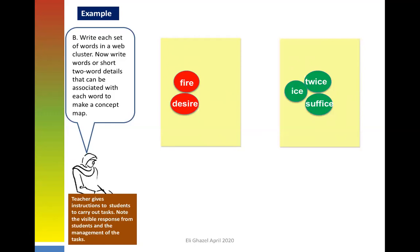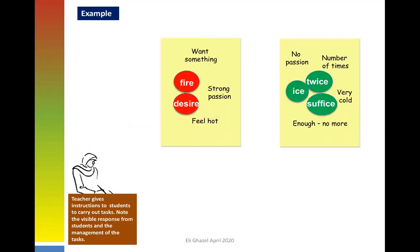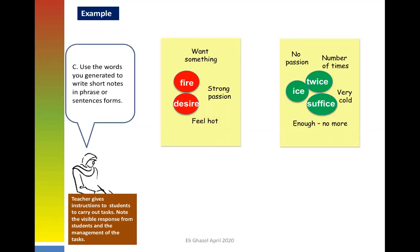Because students are above beginner level, for the 'fire, desire' cluster, what comes to mind? Want something strong, passion, feel hot — no two students might write the same thing, and that is what we want. For the second cluster: no passion, number of times, enough, no more, very cold. These are individual thoughts drawing not just from what you see but also from what you have experienced, so you are activating prior knowledge.